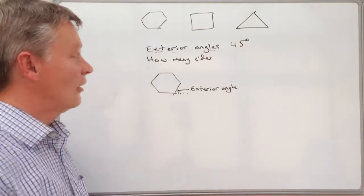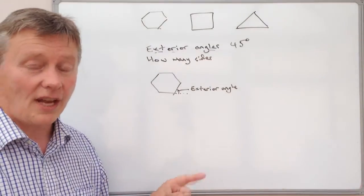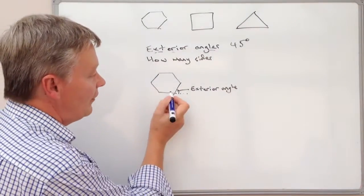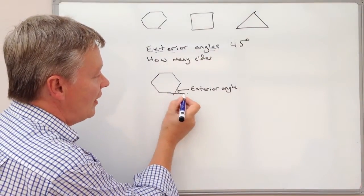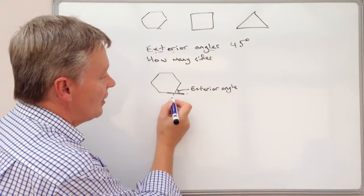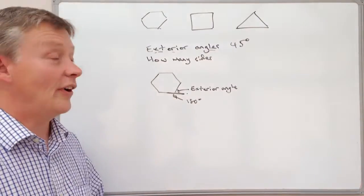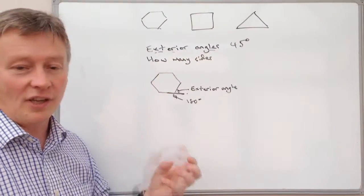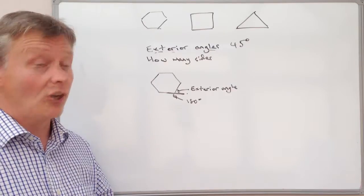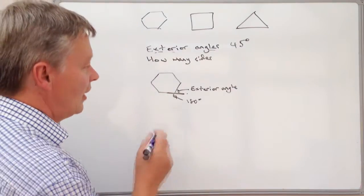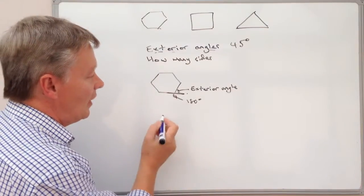The two things that you need to be aware of is what an exterior angle is, and also that if you look at this line here, this line is at 180 degrees. So we can use that fact in order to calculate how many sides this polygon has got.